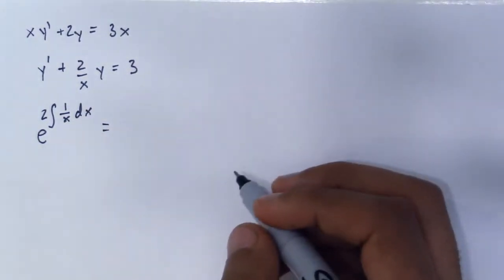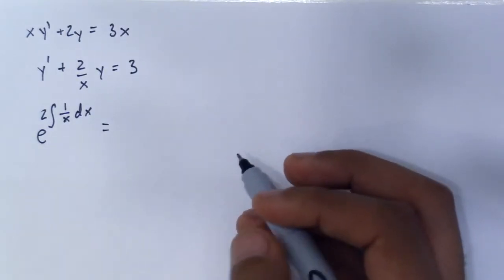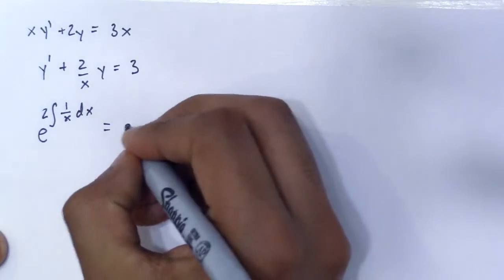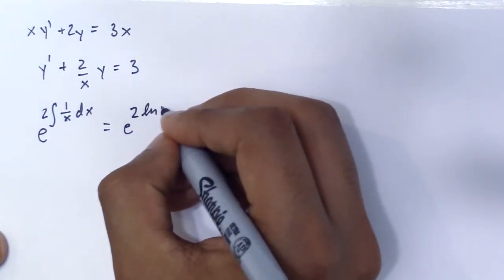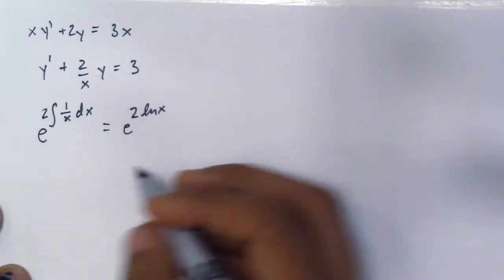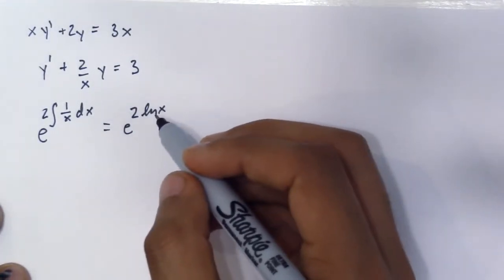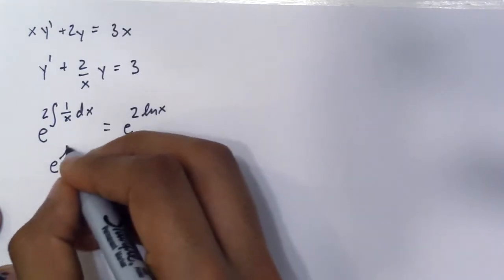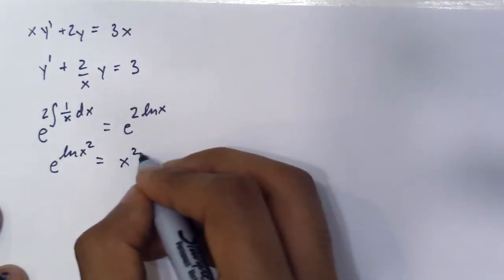Now if you know your integrals or your identities, this would simply equal e to the 2 ln of x. And now another rule of exponents, because you can't simply simplify this because if you did you'd get 2x which is completely wrong. You get e to the ln of x squared which is simply x squared.